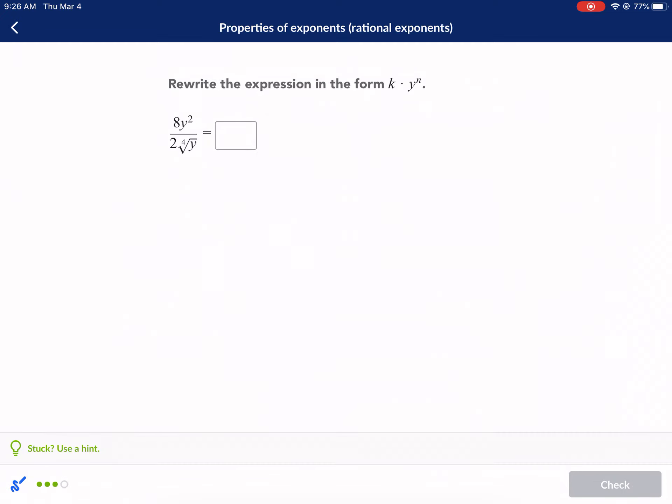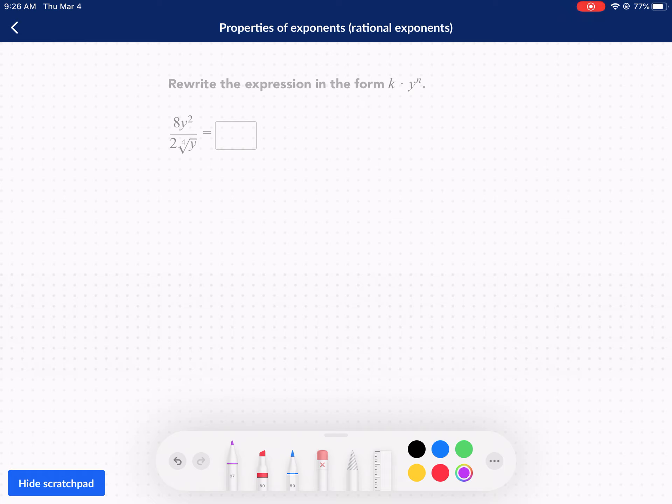One more problem. Let's break this down. First thing I would do is I would cross off this eight and the two and leave only a four in the top. So we have four y squared over. Now I'm going to rewrite this. This is a root. So we can rewrite it as an exponent where the root's the bottom of the fraction. So that's y to the one-fourth.